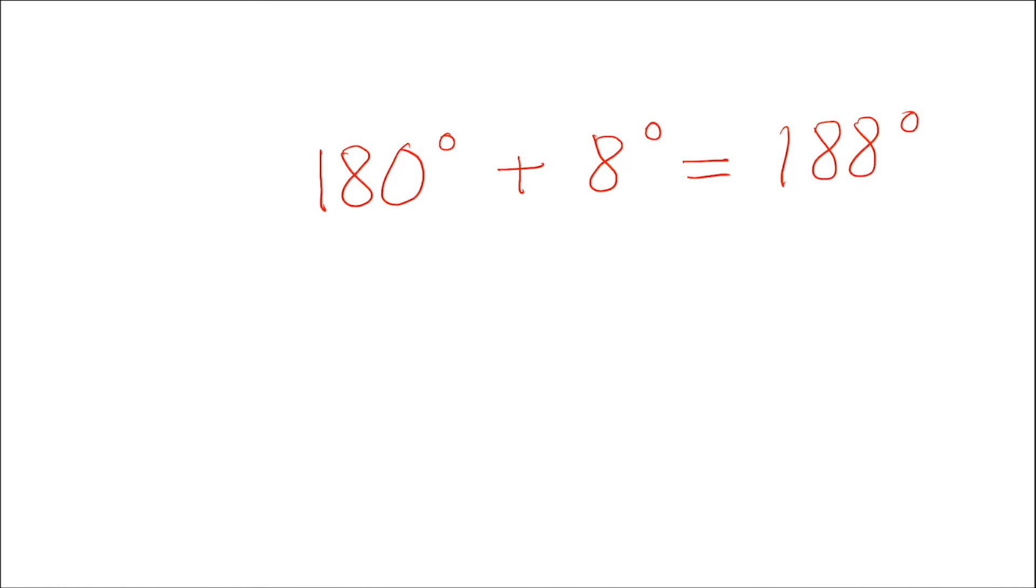Now again if you want to go from compass to map you're going to subtract. But again just remember west is best. Map to compass. And that's how you convert your magnetic declination. East is least. West is best.